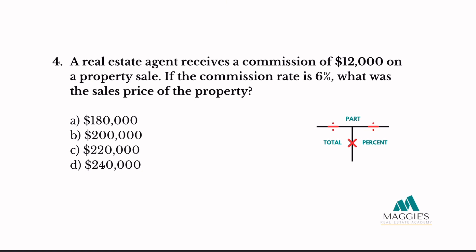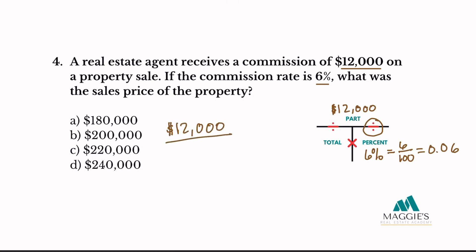Problem 4: A real estate agent receives a commission of $12,000 on a property sale. If the commission rate is 6%, what is the sales price? The commission amount of $12,000 goes on the top, and the 6% rate goes in the right column. Convert to a decimal: 0.06. Divide: 12,000 ÷ 0.06 = $200,000. The answer is B.